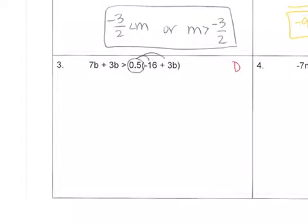Problem 3, I do have parentheses to distribute. So 0.5 times negative 16 is negative 8, times 3 is 1.5.